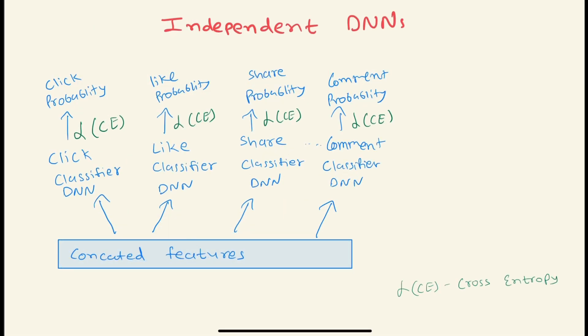For this problem we have two kinds of model choices. First is independent deep neural networks. We first can get all the features, and then for each task we have separate DNNs - so for click there is one, like, share, comment - and for all those classes we have different independent classifiers. Then each one will get the results. For example, in this case, click probability, like probability, share probability, and so on. What loss function will we use? Since all of them look like classification tasks, we can use cross-entropy as the loss function for this particular use case.